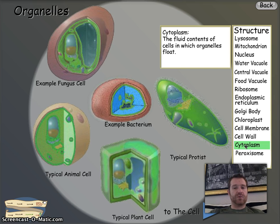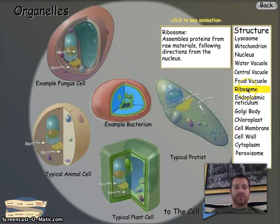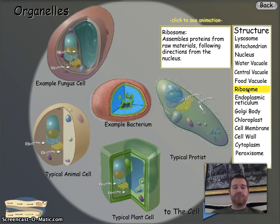Next one is the ribosome. It has a long definition, but all you need from the rap is two words: makes proteins. And if you look at the pictures, yes to plant cells and yes to animal cells.